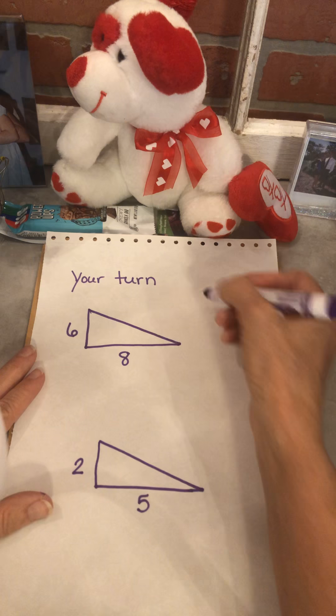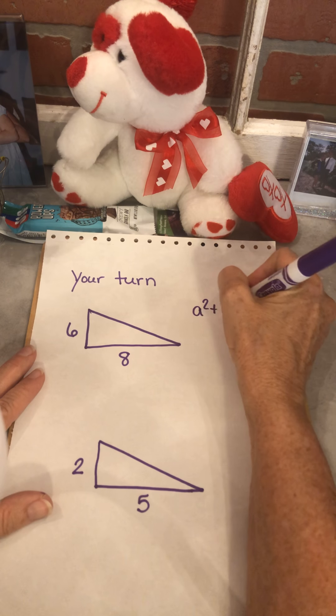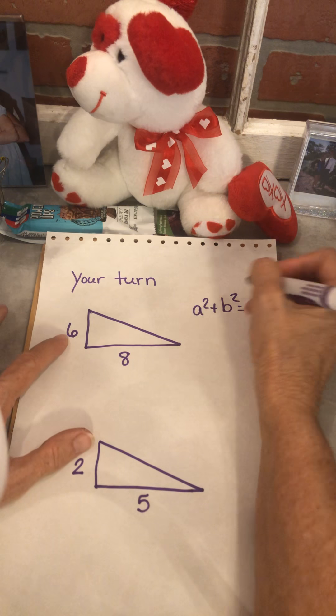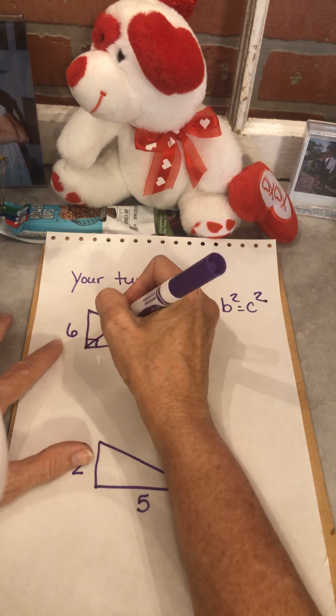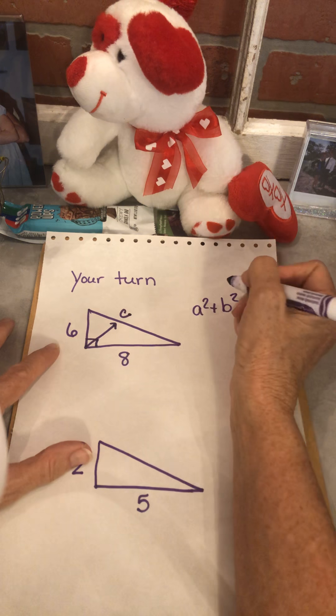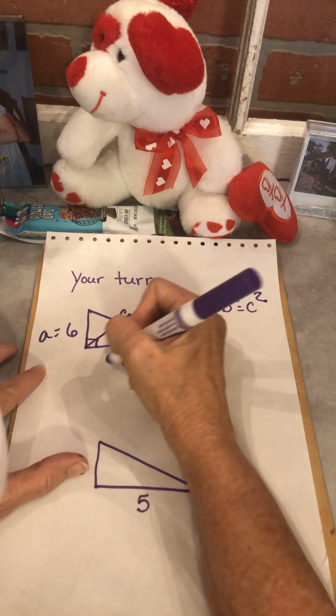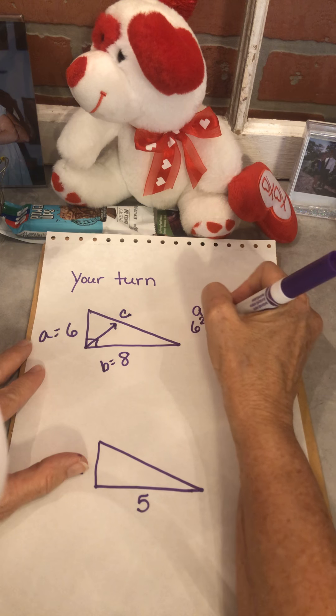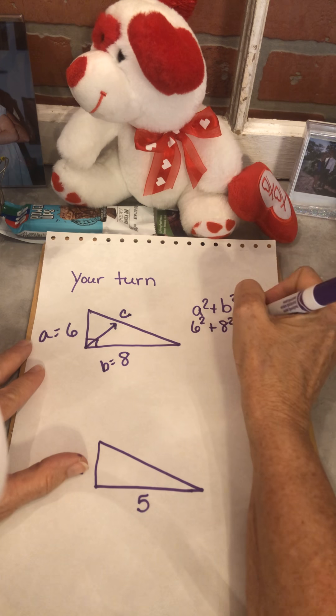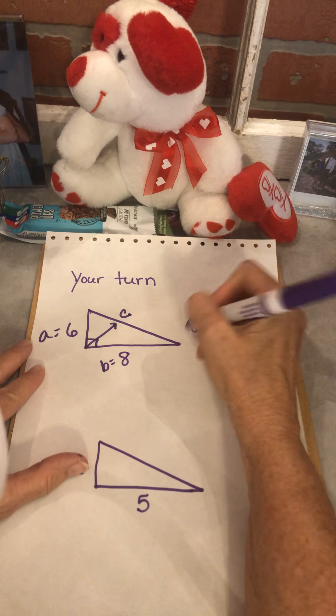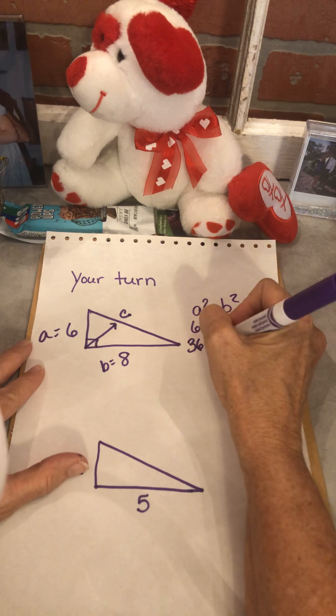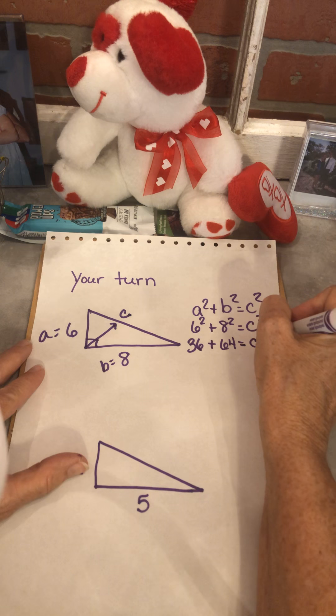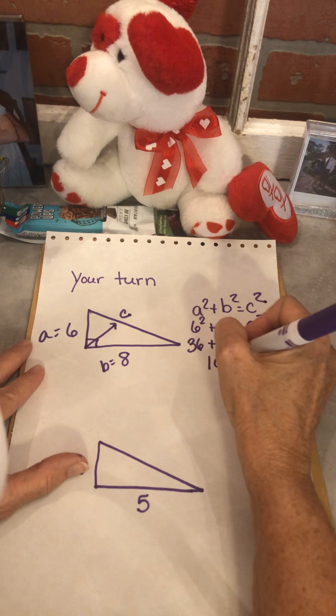Okay, I hope you paused. I forgot to tell you to pause. If you didn't pause, pause, and then I'll see you back here in a second. All right, so here we go. I got a squared plus b squared equals c squared. I'm missing my hypotenuse, which we're going to call c. So I know my a and I know my b. 6 squared plus 8 squared equals c squared.